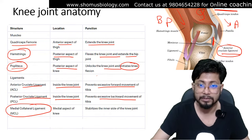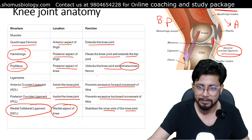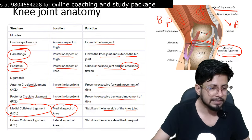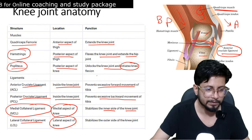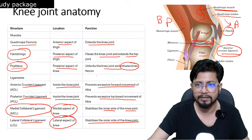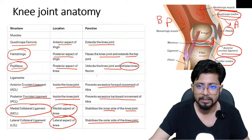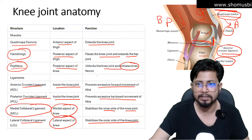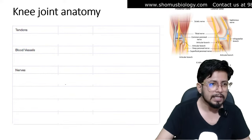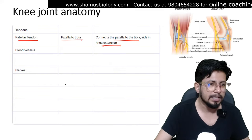The medial collateral ligament (MCL) is located on the medial aspect of the knee and stabilizes the inner side of the joint. The lateral collateral ligament (LCL) is on the lateral aspect and stabilizes the outer side. The patella is connected above via the quadriceps tendon to the quadriceps muscle, and below via the patellar tendon to the tibia. These two tendons are key to knee extension.